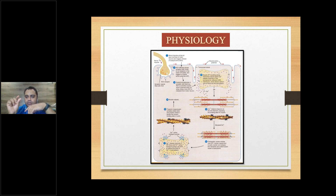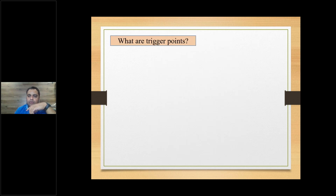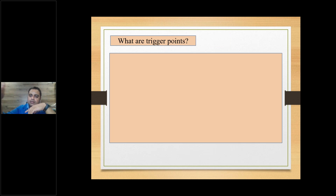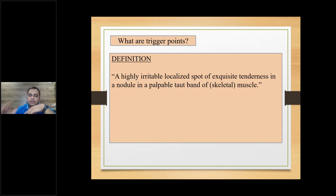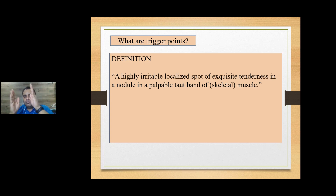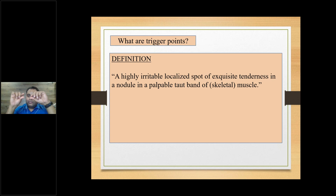Whenever there is a sarcomere contraction, the muscle fiber contracts and for some reason gets stuck, forming a small nodule. When that is not treated, it affects subsequent fibers around it and becomes a bigger nodule. A trigger point is a highly irritable, localized spot of exquisite tenderness — a nodule in a palpable taut band of a skeletal muscle. When the actin and myosin filaments move and the myosin fiber becomes very thickened, you'll find a small nodule along a band.